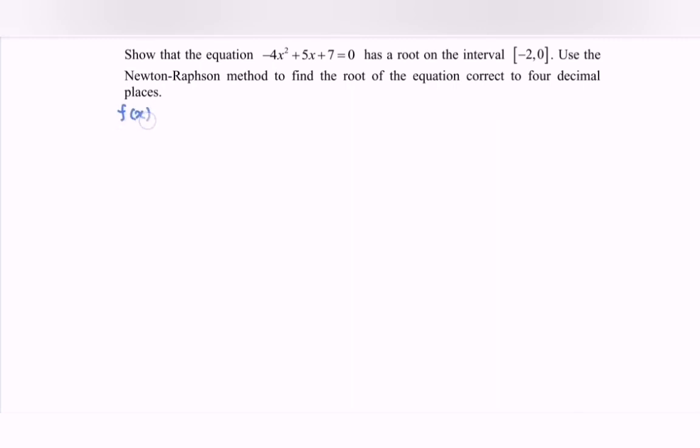So we can set f(x), which is equal to -4x² + 5x + 7 = 0 as the function f(x). It has a root on the interval [-2, 0]. So use the Newton-Raphson method to find the root of the equation, correct to 4 decimal places.